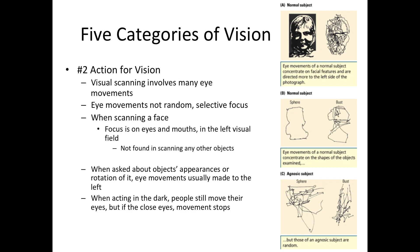For example, when we scan a face, we make multiple eye movements directed toward the eyes and mouth — those are the first features we focus on. Interestingly, research shows we also direct more eye scans to the left visual field, meaning the right side of the other person's face. We focus more on the right side of someone else's face than their left. This scanning bias is important in how we process faces and does not occur with other objects.